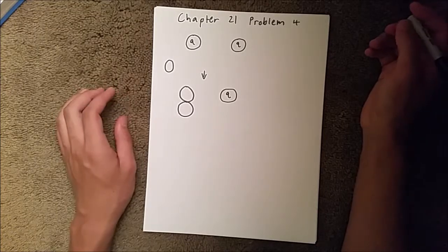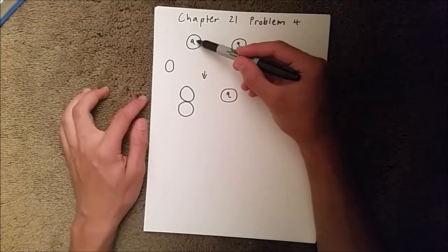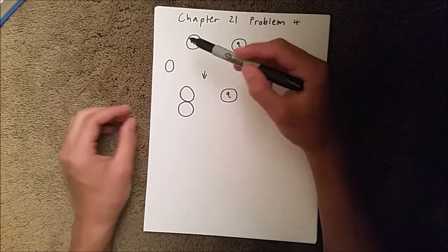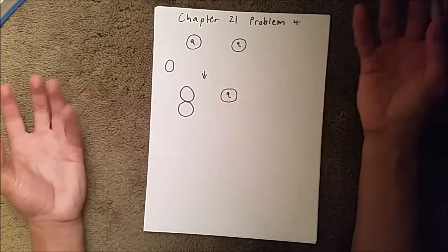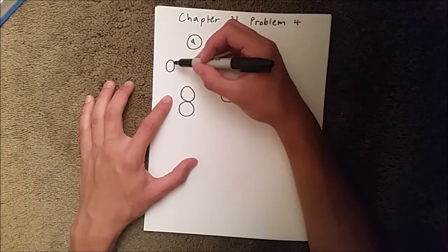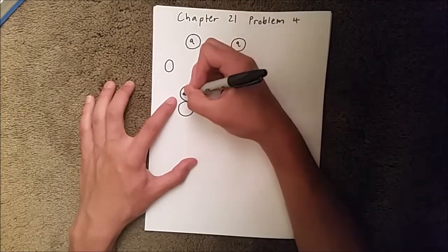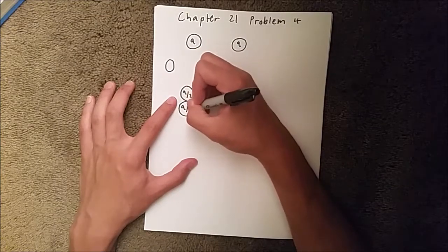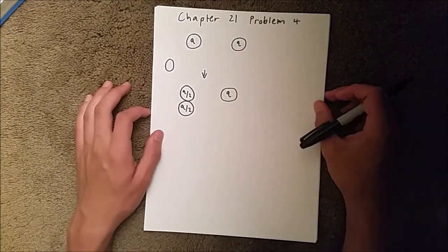Since they're touching, the total charge between these two spheres is going to split. Since we have charge of Q here and a charge of zero, it's going to split to Q over 2 and Q over 2.